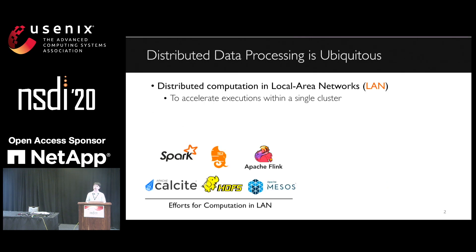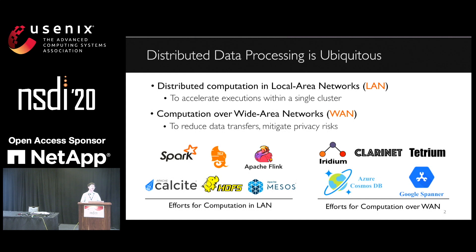As we know, data processing is very popular these days. To serve efficient data analytics, there are lots of work trying to distribute the computation across multiple machines. Some popular examples include Spark and TASP, which are widely used inside a single cluster. More recently, we are seeing an increasing trend of data analytics over wide area networks where the source data is often geo-distributed.